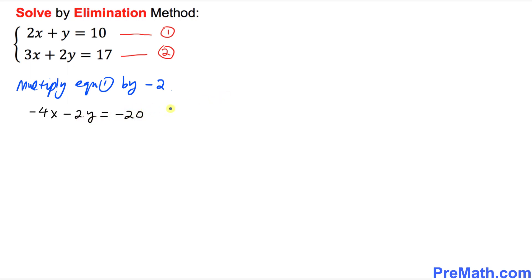Now we're going to add this equation to equation number 2. Equation number 2 is 3x plus 2y equals 17.